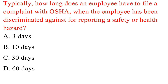Question. Typically, how long does an employee have to file a complaint with OSHA when the employee has been discriminated against for reporting a safety or health hazard? A. 3 days. B. 10 days. C. 30 days. D. 60 days. Answer: C. 30 days.